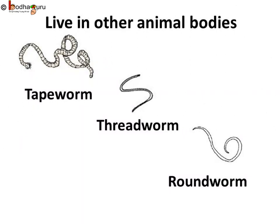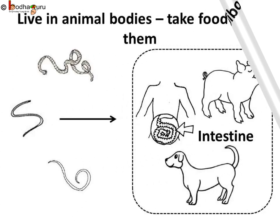Strange but true, some animals live inside the body of other animals. These are also harmful and cause various diseases. So how do they get food? These worms, like tapeworm, roundworm and threadworm, live in the intestine of other animals. They feed on the digested food inside the body of the host animal. Life is so convenient for them as they don't have to cook food or even search for it. It is the host who has to suffer because of it.